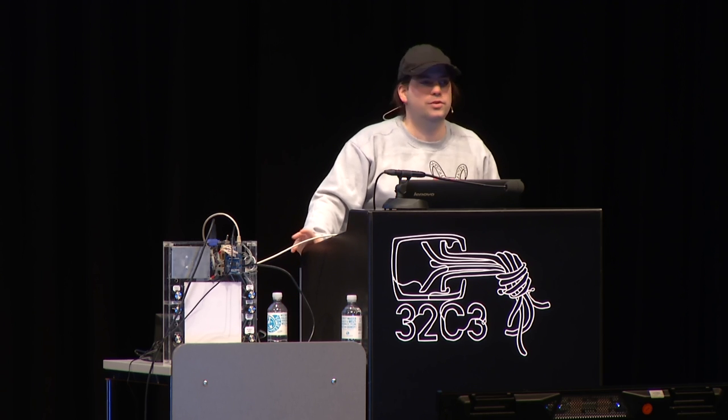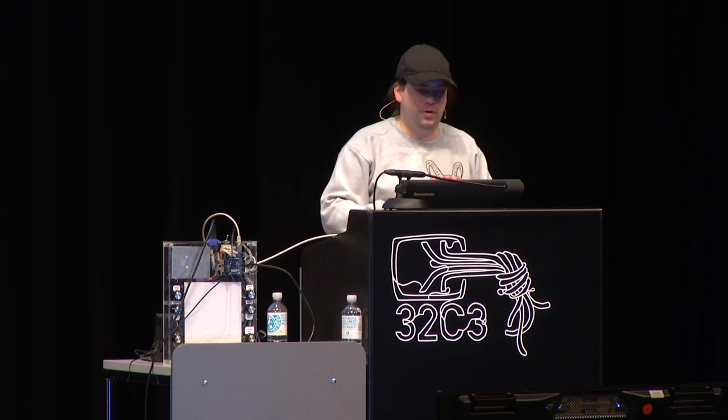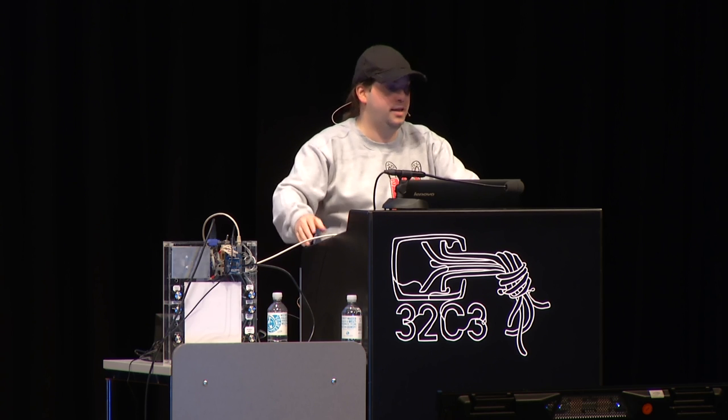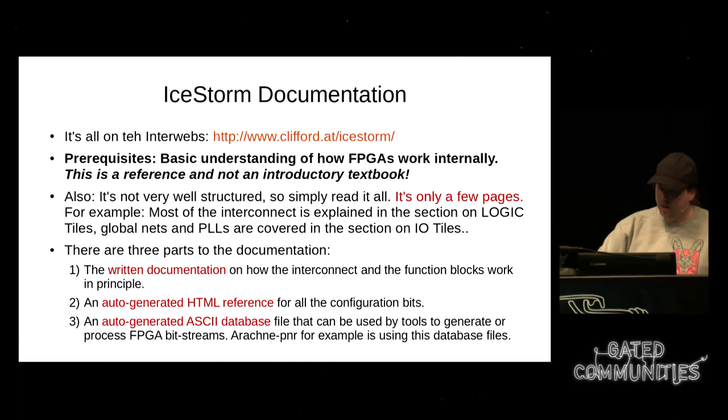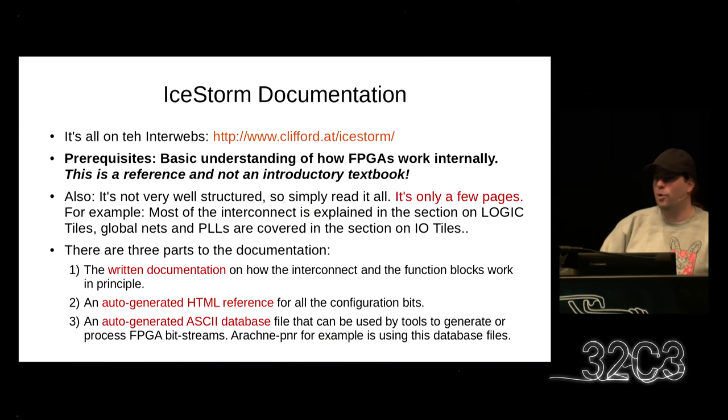You can browse the documentation at clifford.at/icestorm. Fair warning: it's a reference, not an introductory textbook, so if you don't know how FPGAs work internally it might be a hard read. It's also not very well structured, but it's not very long — just a few pages. My recommendation is to just read the entire thing once to get an overview. Most of the interconnect is explained on the logic tiles page, and things like PLLs and global nets are on the I/O tiles page. You can read it in maybe an hour or two.